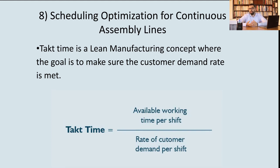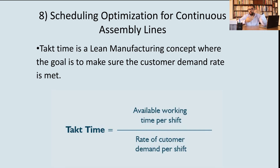The customer demand is the number of products that you need to produce for that day. If you have 100 products to produce and 480 minutes available, dividing these two gives you 4.8 minutes — approximately five minutes. This means that every five minutes, you need to produce one product.